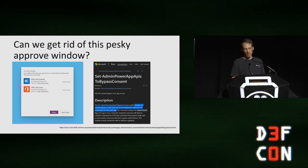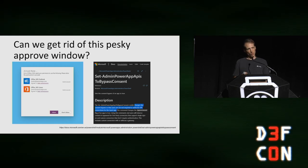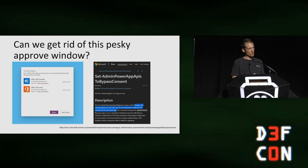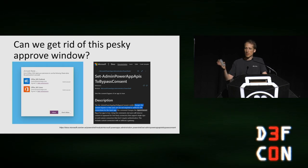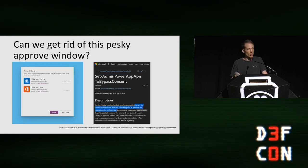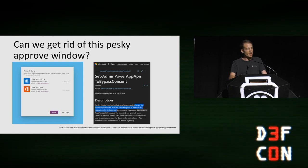We've seen multiple ways hackers are living off the land — specifically on Microsoft Power Platform and Zapier — including lateral movement, privilege escalation, ransomware, and account takeover. All of it was drag-and-drop, very simple and easy to use.